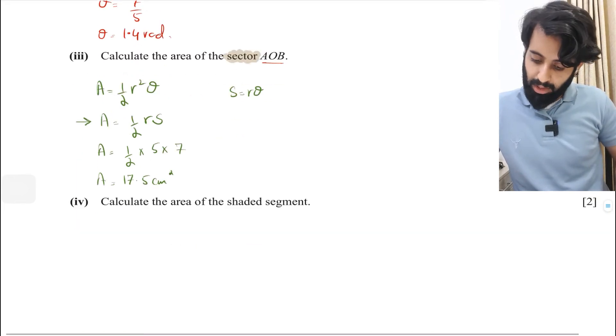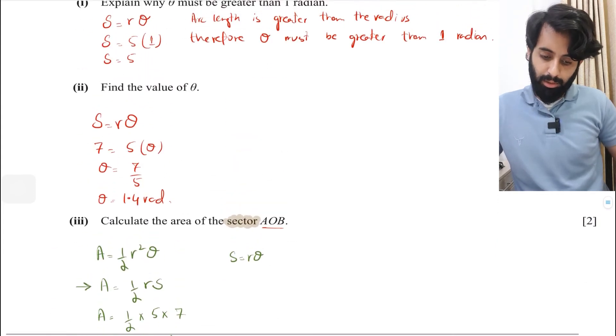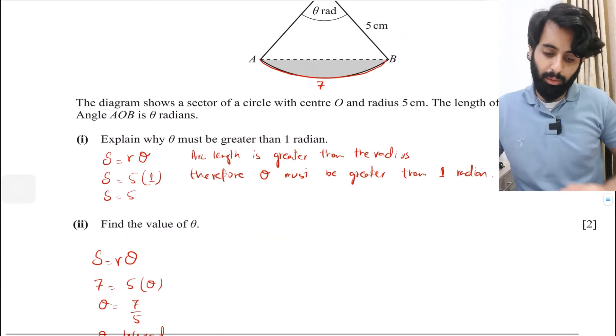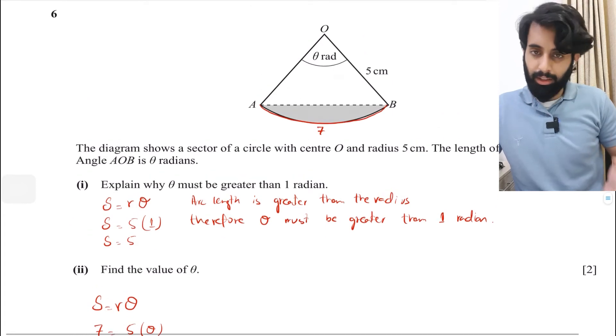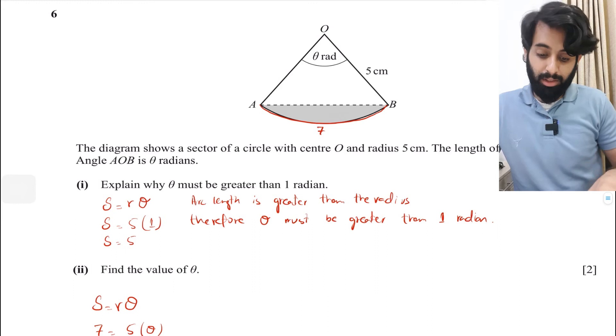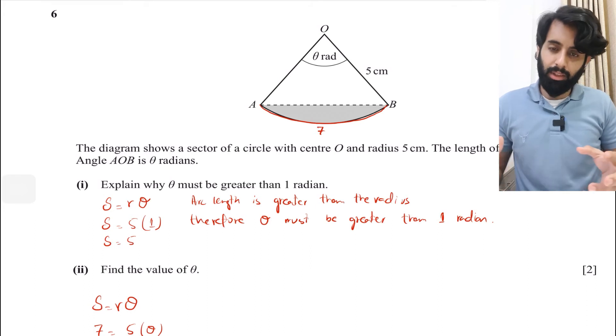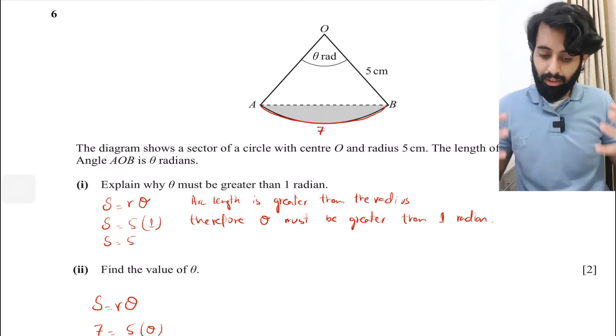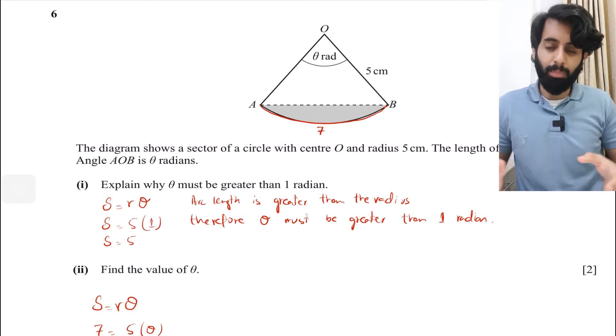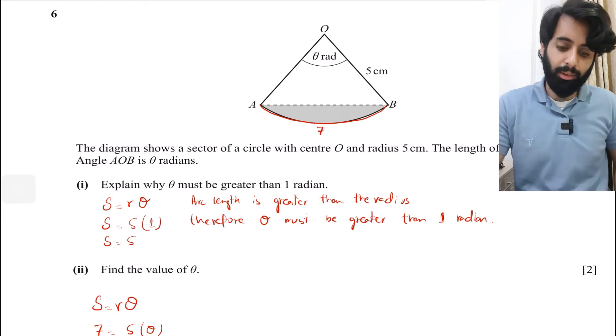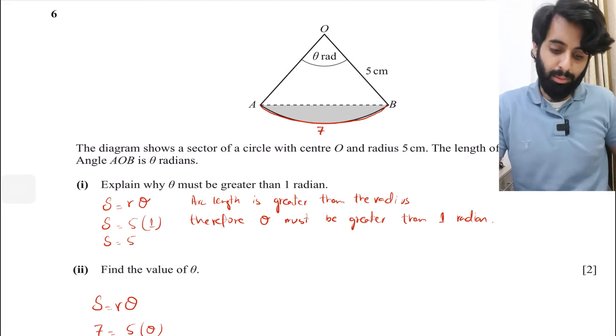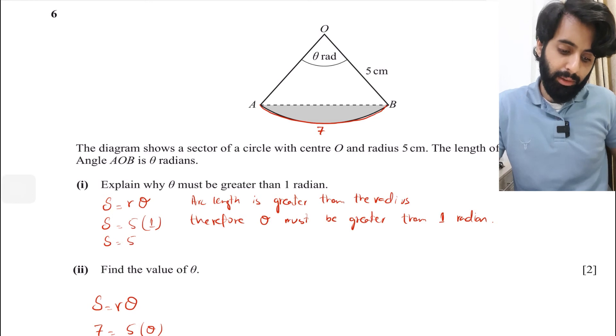Part four says calculate the area of the shaded segment. You can't have a head-on approach for this because if it were asking for area of sector or triangle we could, but for shaded region you need to figure something out first and then subtract something else. First break it down and understand the theoretical aspect. If I want to find the area of shaded region, the first thing we need is the area of sector. Luckily the question already made us figure that out.